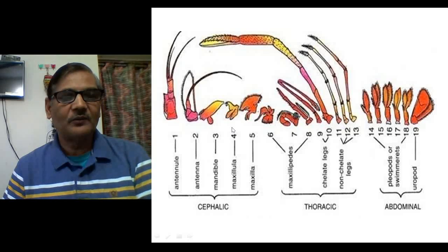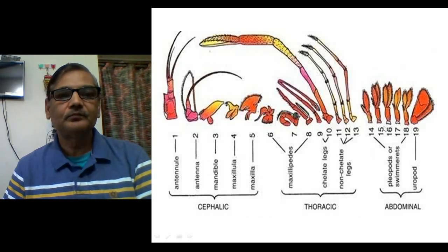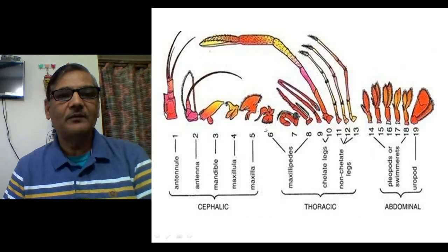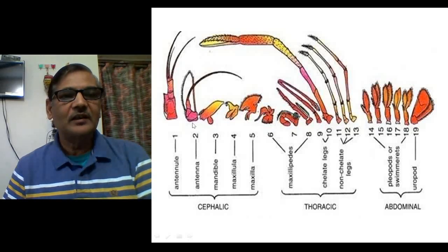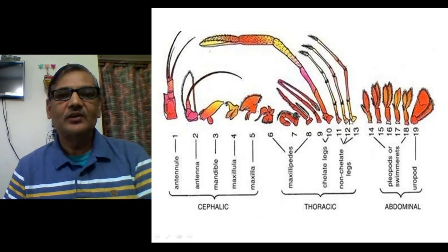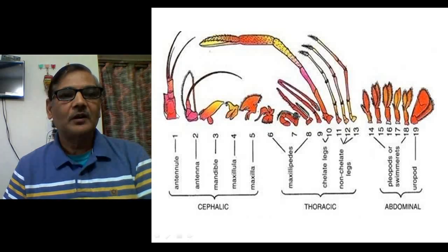There are 5 pairs of cephalic appendages, 8 pairs of thoracic appendages, and 6 pairs of abdominal appendages. When we observe the developmental pattern of these appendages during embryonic life, the proteins and embryonic tissues which give rise to such structures are almost the same. But in later stages of development, these appendages gain variation in their morphology and are used to perform different functions. So they are called homologous because they are similar in their origin pattern but perform different functions.